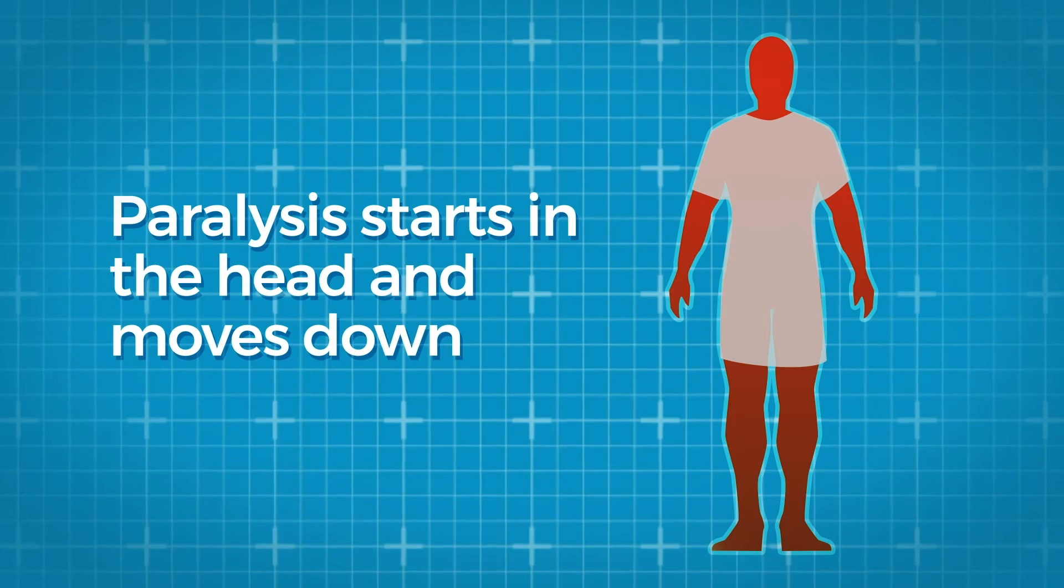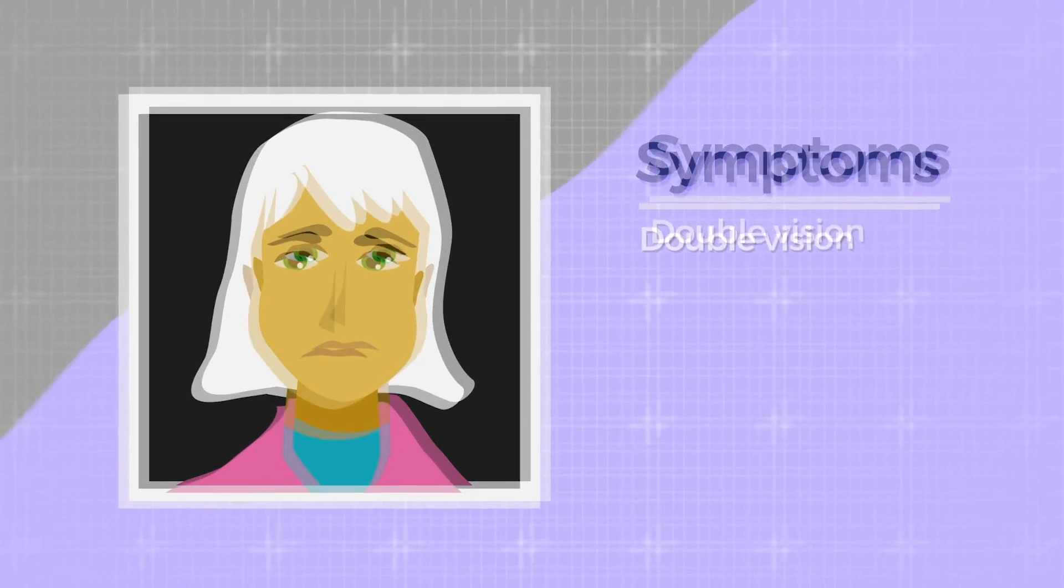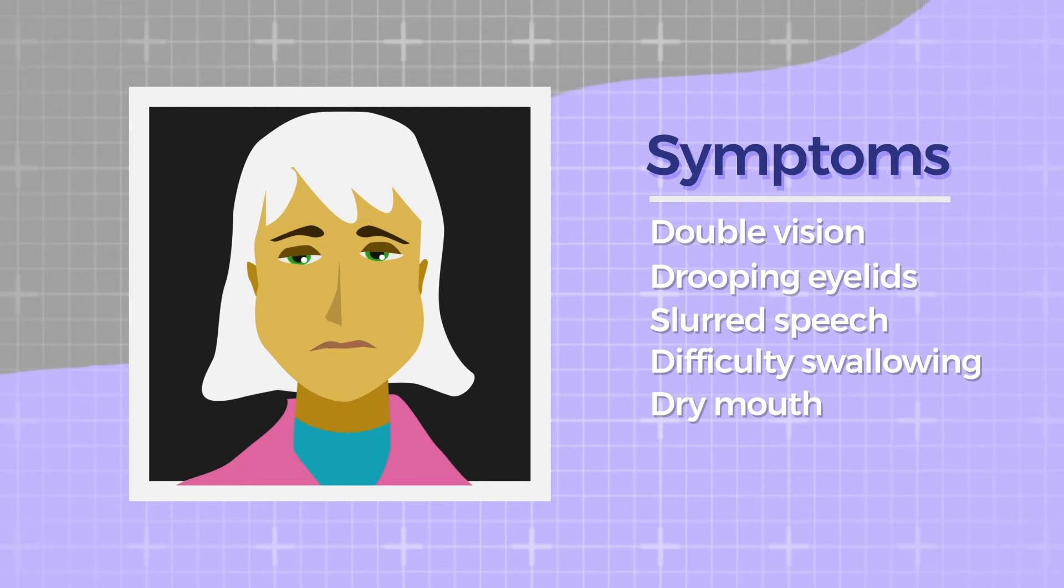Paralysis starts in the head and moves down. People with botulism may have double vision, drooping eyelids, slurred speech, difficulty swallowing and dry mouth.